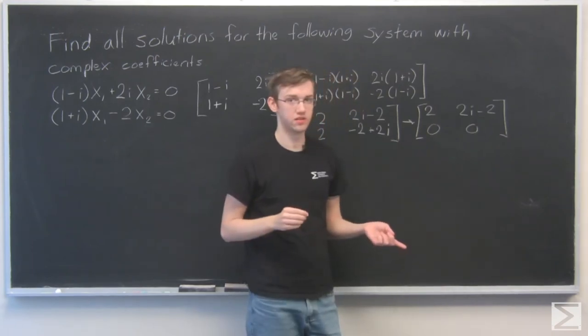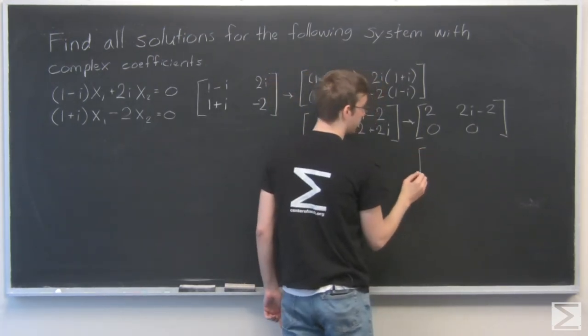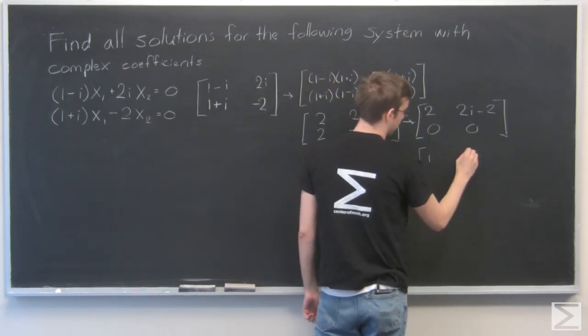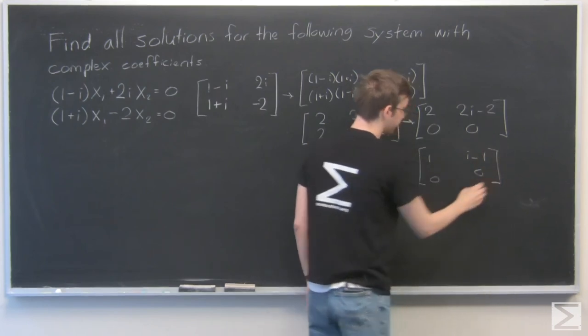And I can also divide the top row by 2. So our final reduced row echelon form of the matrix is 1, i minus 1, 0, 0.